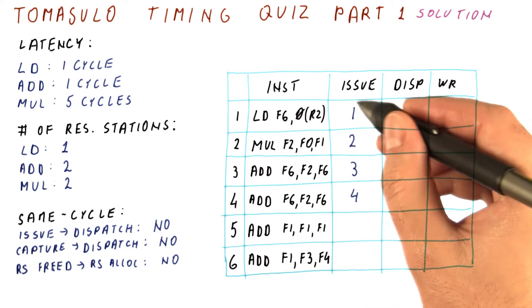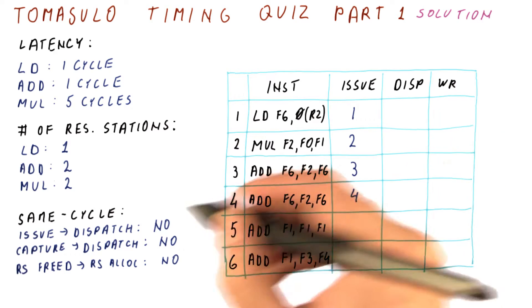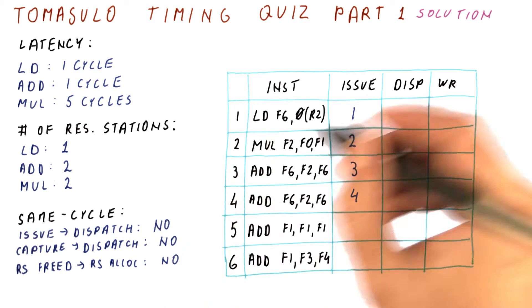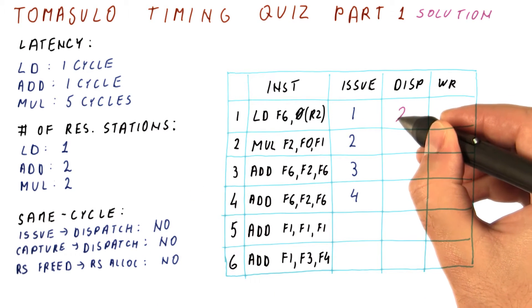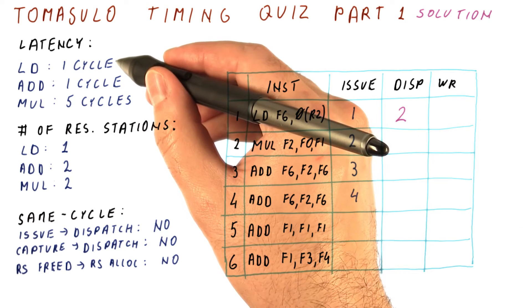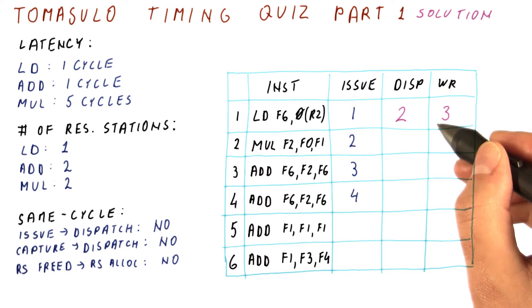The load is issued in cycle one. It doesn't have any dependencies, but we know that it cannot dispatch in the same cycle when it's issued. So it will dispatch in cycle two. The load takes one cycle to do, so it will write its result in the very next cycle.